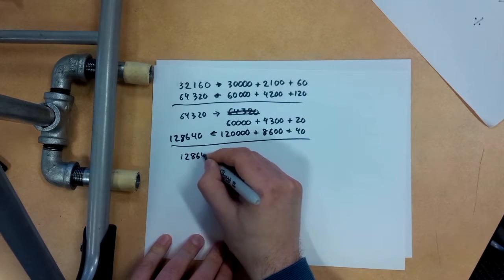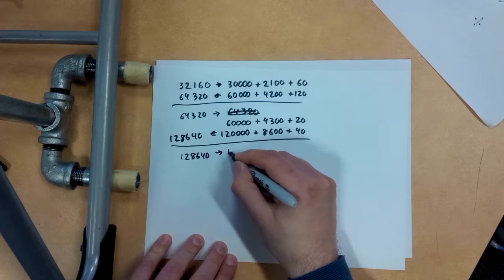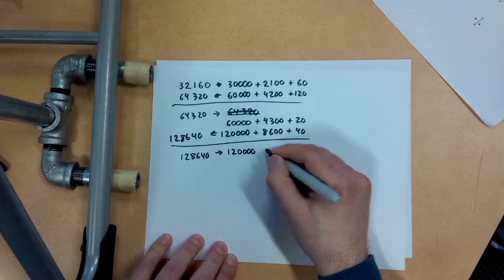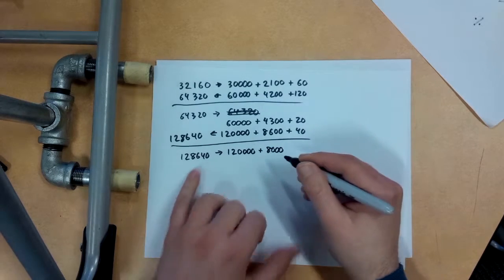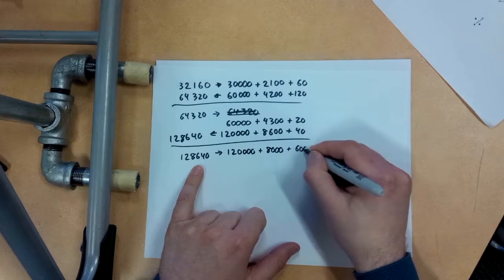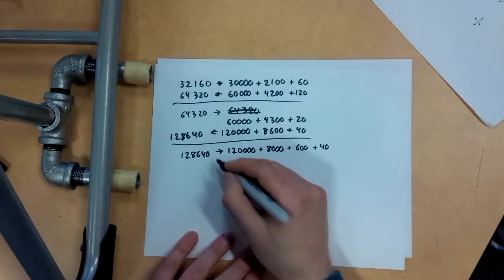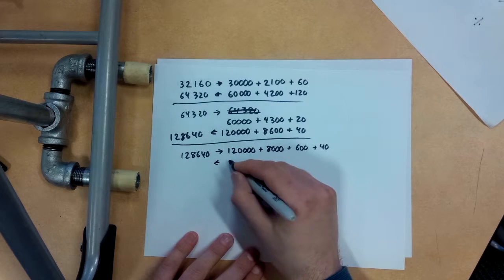If I double that again, 128,640. I'm going to split that up in this way. So that's a 12 with four zeros behind it, and then an 8,000 because that's getting kind of crazy, plus a 600 plus a 40. I can break it up in any way I want really, but I'm just trying to make it easy, right?